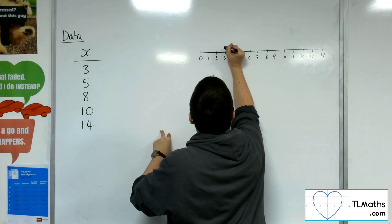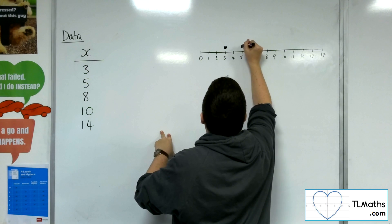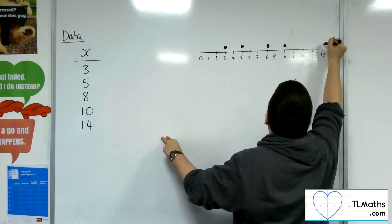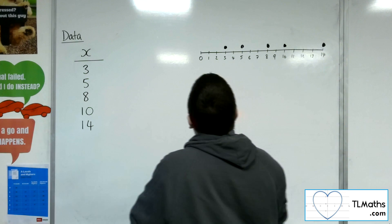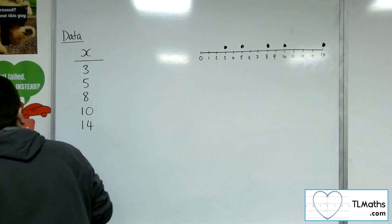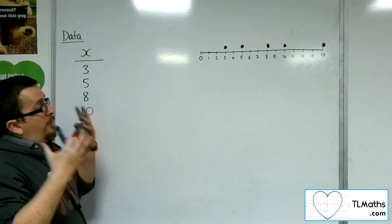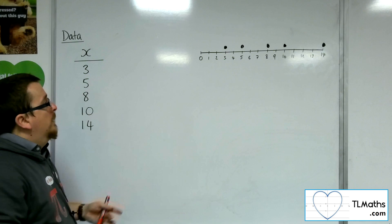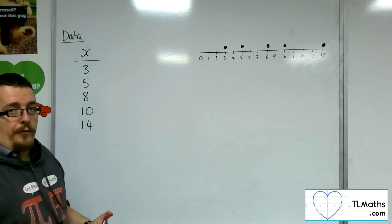5, 8, 10, and 14. So there are my data points. So I'm talking about trying to find, on average, how far each of these data points are away from the mean. So the first thing that I want to do is find the mean.